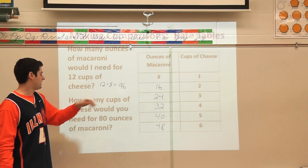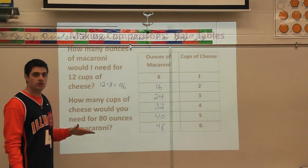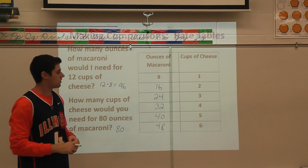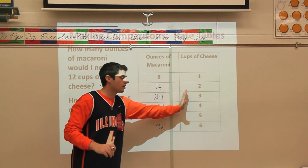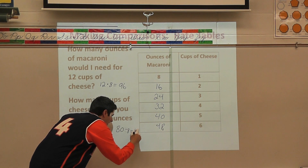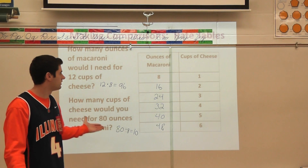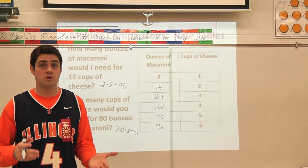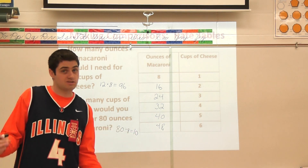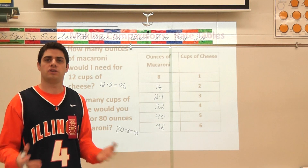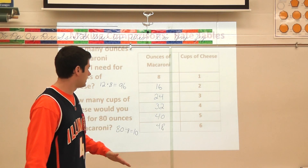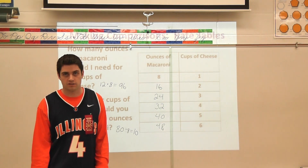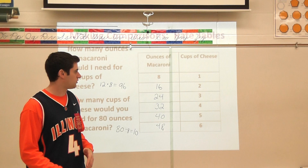How many cups of cheese would you need for 80 ounces of macaroni? Now we flip it and reverse it. I'm talking about ounces of macaroni, so if I had 80 ounces, going from the right side of my chart back to the left, I divide by eight. 80 divided by eight is 10 — that's 10 cups of cheese. Don't forget: when working these problems, it's really important to include your unit. Is it 10 cups of cheese, 10 ounces of macaroni, $10? You have to put the unit so you know what you're referring to.